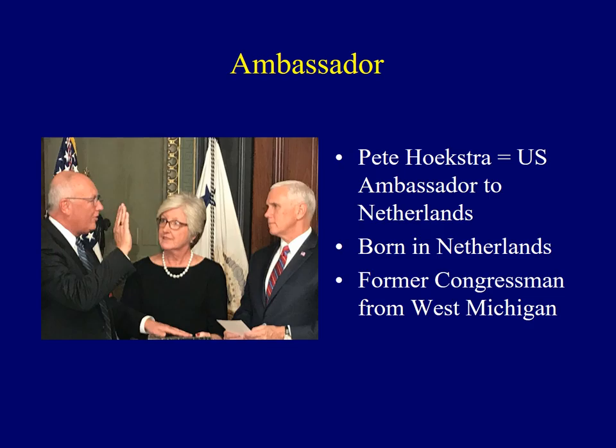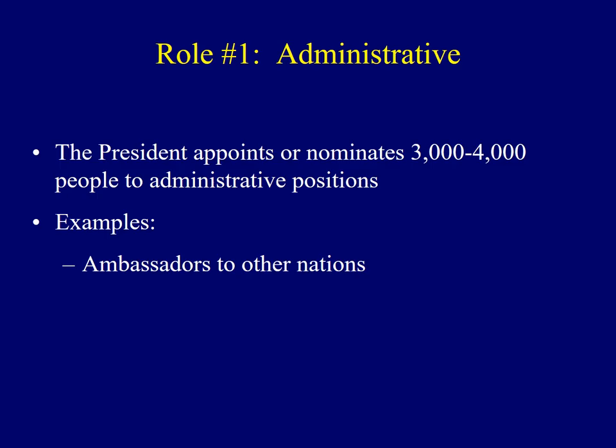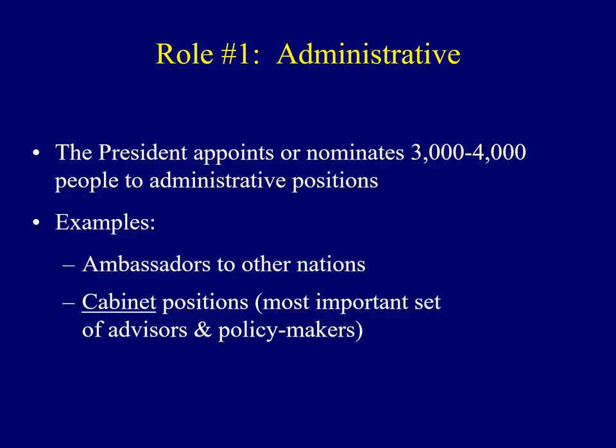One example would be ambassadors to other nations. Ambassadors to other countries serve as the eyes and the ears for the administration, maybe even a spokesperson for the president dealing with other countries. Here we see Pete Hoekstra — he is the current U.S. ambassador to the Netherlands. He was actually born there, came to the U.S. as a child, became an American citizen, and is the former congressman from West Michigan. Now he's the U.S. ambassador to the Netherlands.